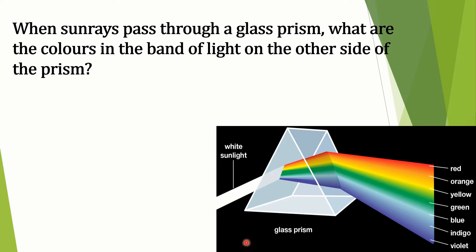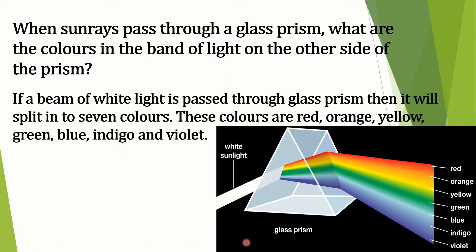Students, when sun rays pass through a glass prism, what are the colors in the band of light on the other side of the prism? If a beam of white light is passed through a glass prism, then it will split into 7 colors. These colors are red, orange, yellow, green, blue, indigo and violet.